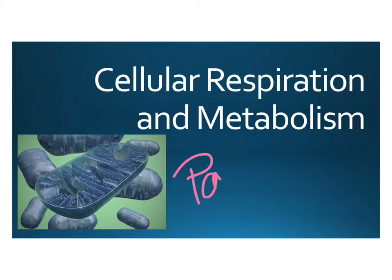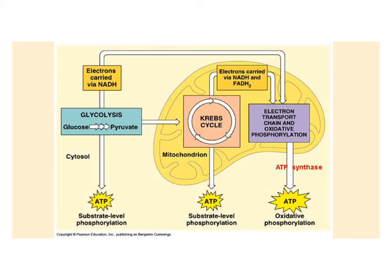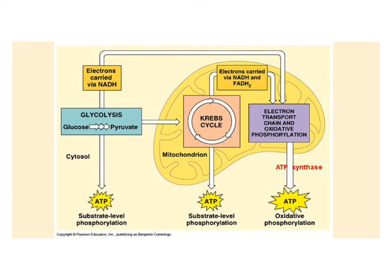This lesson is part two on cellular respiration and metabolism. We're going to continue where we left off. Looking again at an overview, we've talked about glycolysis — breaking glucose into two pyruvate molecules, producing some ATP in substrate-level phosphorylations, and generating electrons carried by NADH to the electron transport chain. We'll be focusing this time on the Krebs cycle, and also discussing some alternative pathways like fermentation or anaerobic processes.